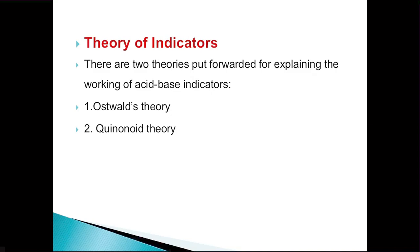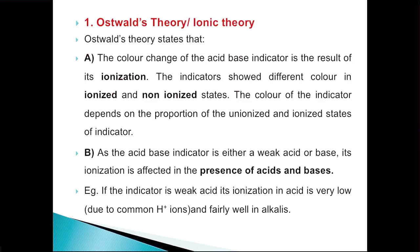The first theory is Ostwald's theory, and the second one is quinonoid theory. Let's see each one in detail. The first one is Ostwald's theory, or we can say ionic theory. As per Ostwald's theory, the color change of an acid-base indicator is a result of its ionization. The indicators show different color in ionized and non-ionized states.